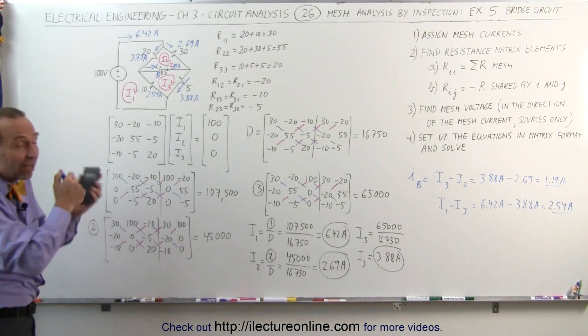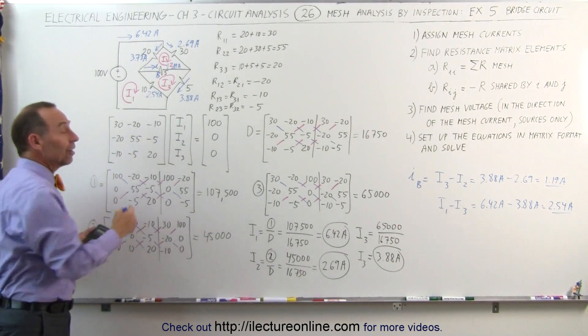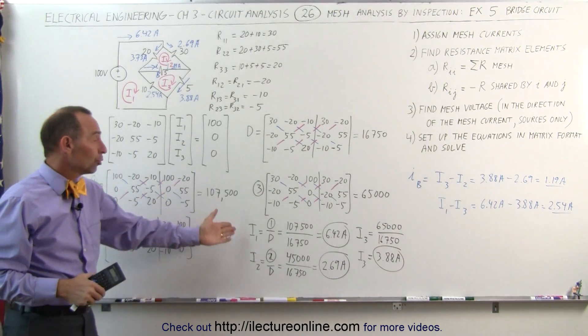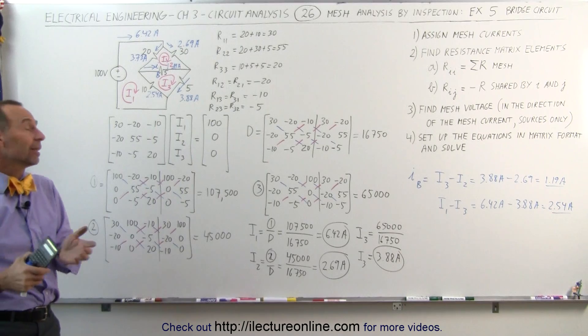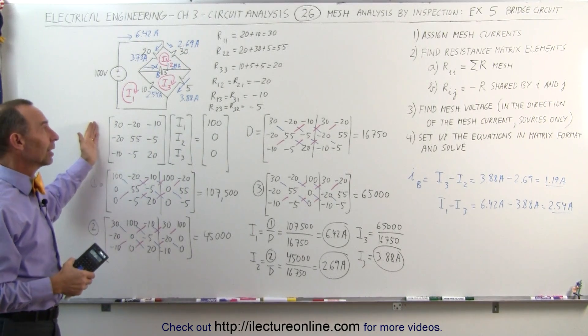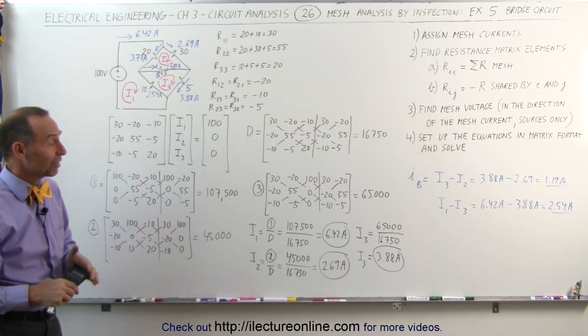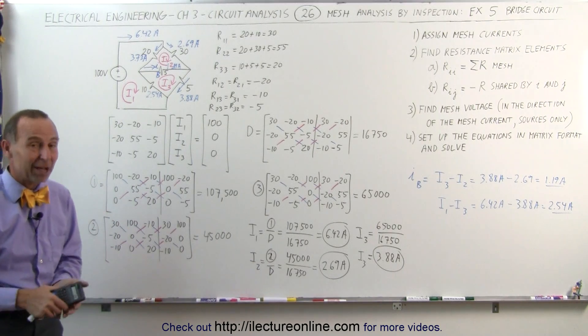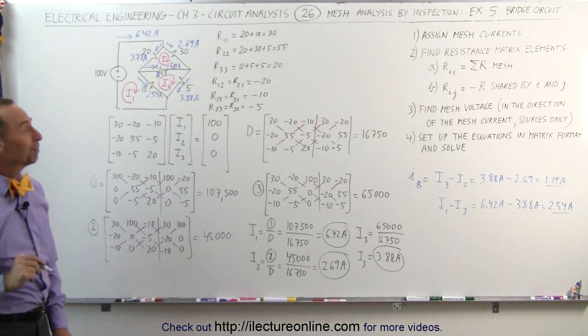Here you can see that this mesh analysis by inspection very quickly sets up the equations. And then it's just a matter of doing matrix algebra to find the solution to the 3 currents. It's a really good method, a really powerful method, and it can be set up very, very quickly. I really like the mesh analysis by inspection method. It makes it a whole lot faster and easier to solve these types of problems. And that's how it's done.